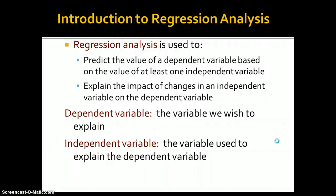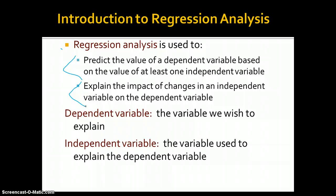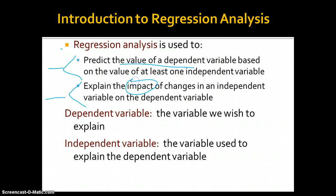Moving on, regression analysis is also a way to look at the relationship between two variables, and it also looks at linear relations — we're doing linear regression. Regression analysis is used to predict the value of a dependent variable based on the value of at least one independent variable, and to explain the impact of changes in an independent variable on the dependent variable. So we use it for both purposes: we predict the value or we predict the impact.